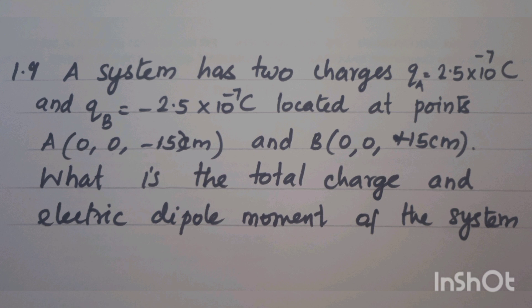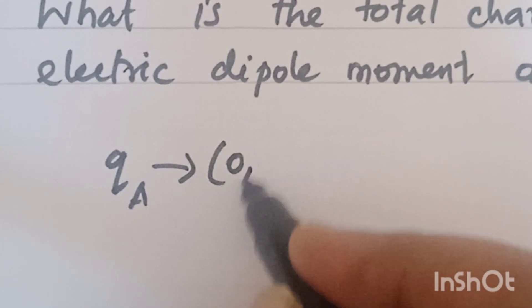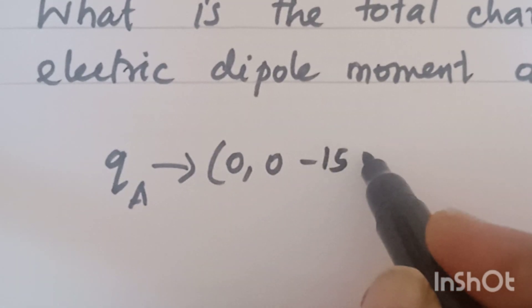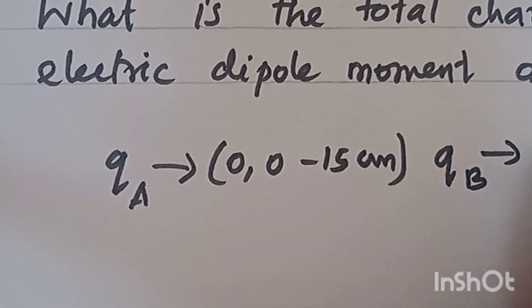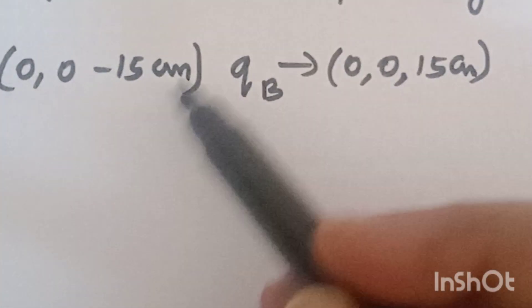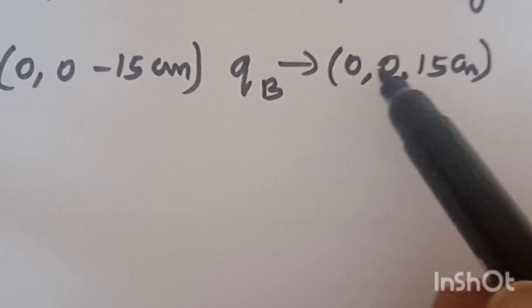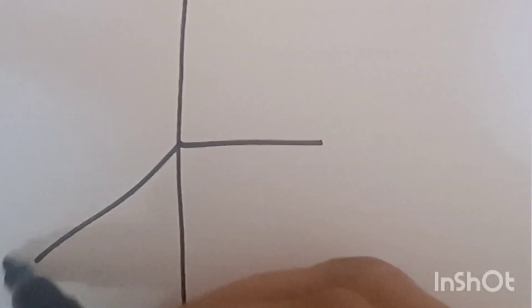The formula for dipole moment is P is equal to Q into 2A. QA is at (0, 0, -15 cm) and QB is at (0, 0, +15 cm).